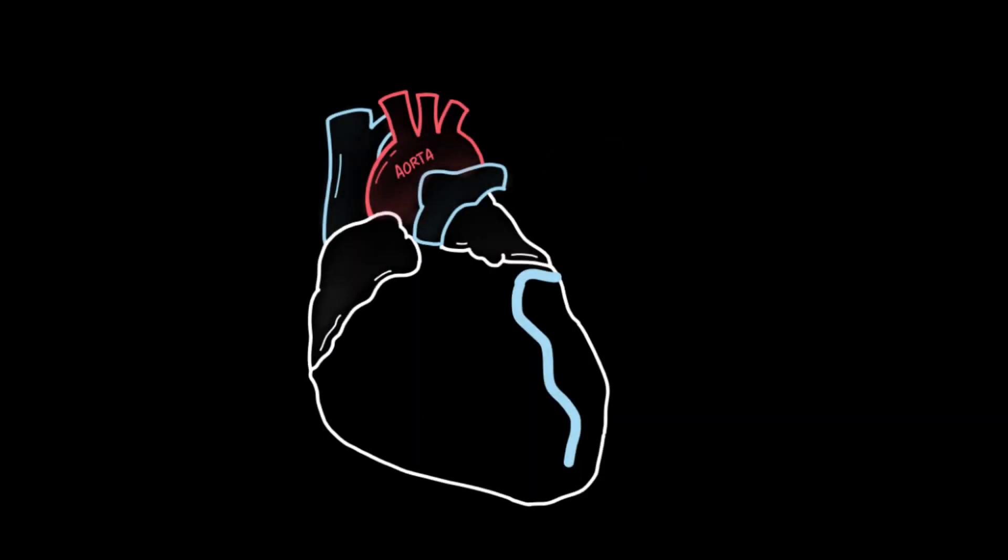Last but not least, we have the anterior veins that do not drain into the coronary sinus. Instead, they drain directly into the right atrium.